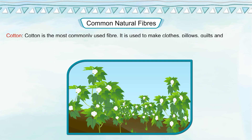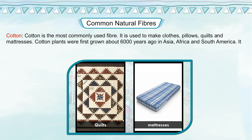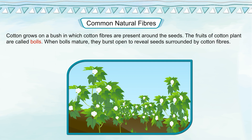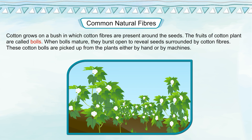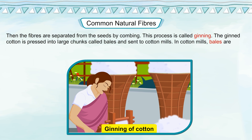Cotton is the most commonly used fiber. It is used to make clothes, pillows, quilts, and mattresses. Cotton plants were first grown about 6,000 years ago in Asia, Africa, and South America. It was extensively used by the ancient Greeks in their clothing. Cotton grows on a bush where cotton fibers are present around the seeds. The fruits of the cotton plant are called bolls. When bolls mature they burst open to reveal seeds surrounded by cotton fibers. These cotton bolls are picked from the plants either by hand or by machines.